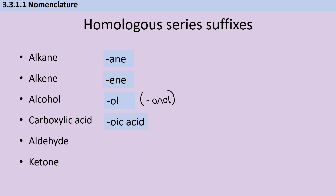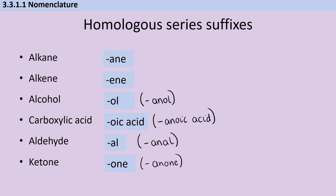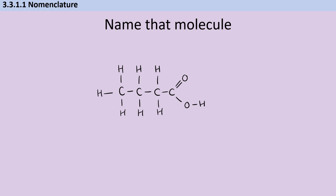For carboxylic acid, the suffix is -oic acid, and again the only carboxylic acids you've met so far at GCSE were based on an alkane with this carboxylic acid group on the end, so you've only met -anoic acid. Aldehydes and ketones are new to you — aldehydes have the suffix -al and ketones have the suffix -one. You're mainly going to meet them in an alkane context, so molecules ending in -anal or -anone, like ethanal or propanone.